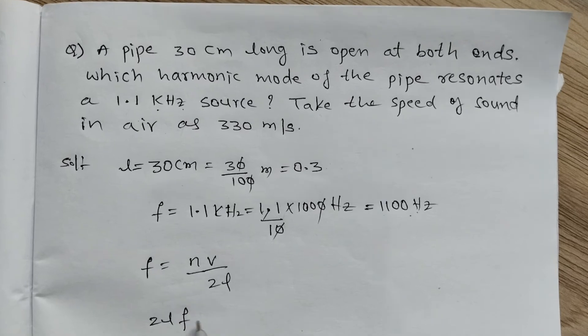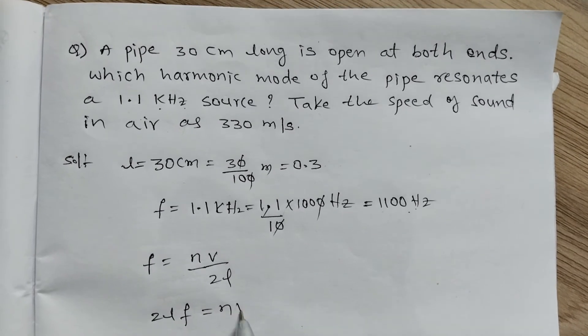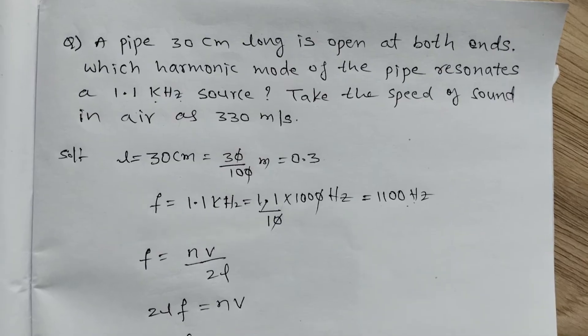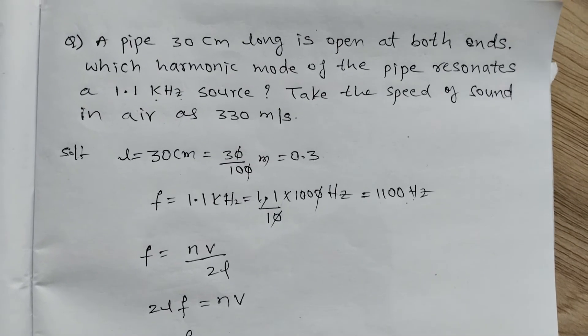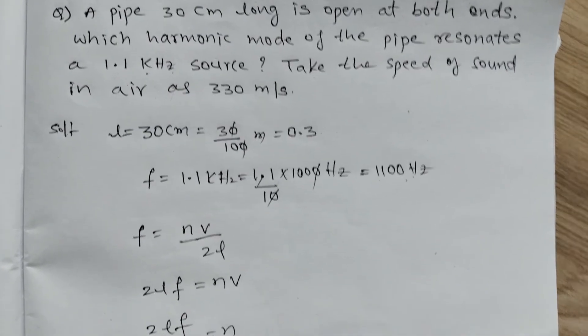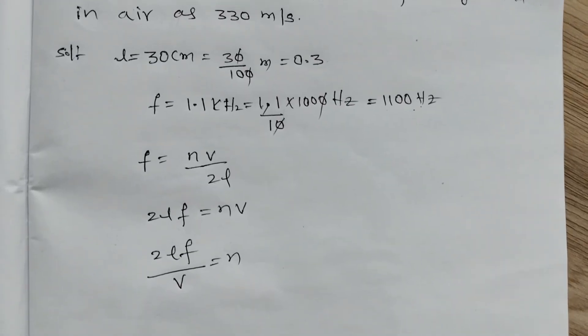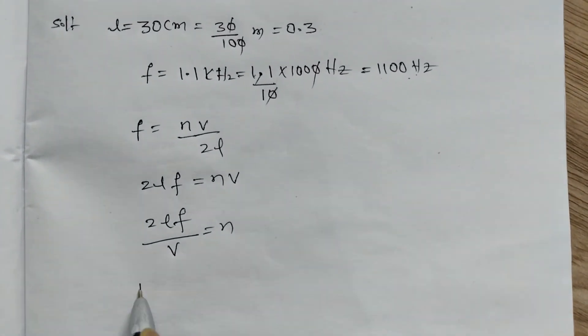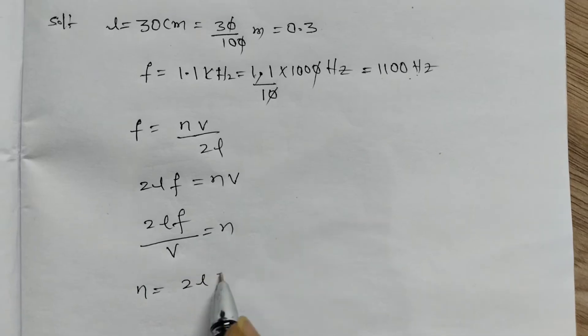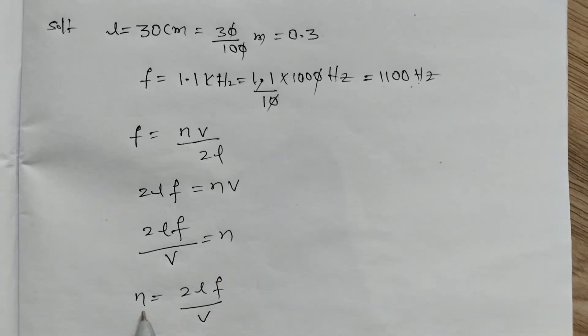The formula is f equals n into V by 2L. Therefore, 2Lf by V equals n. Rearranging: n is equal to 2Lf by V.